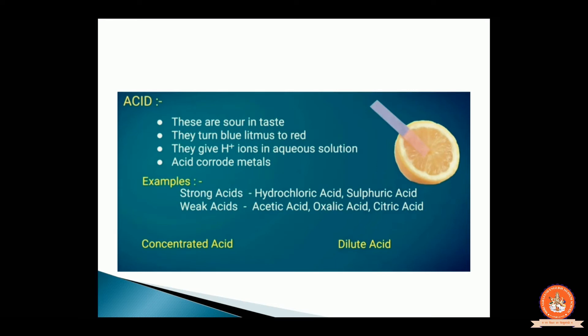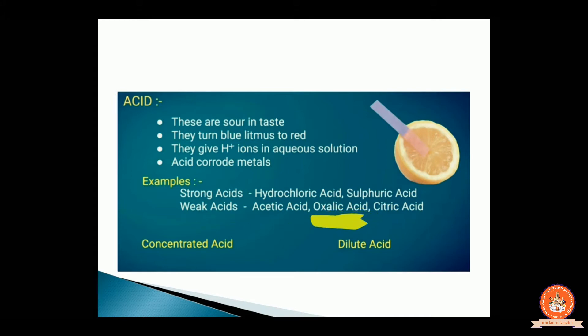Coming on to the examples of acid — there are strong acids and weak acids. Strong acids include hydrochloric acid and sulfuric acid. Weak acids include acetic acid, oxalic acid, and citric acid. These are the examples for acid.